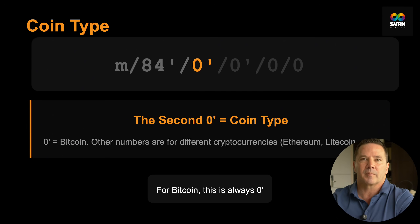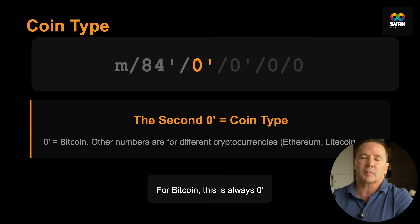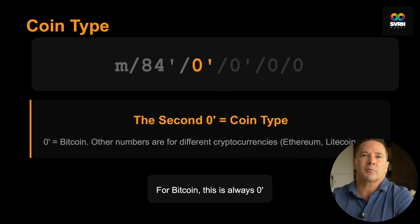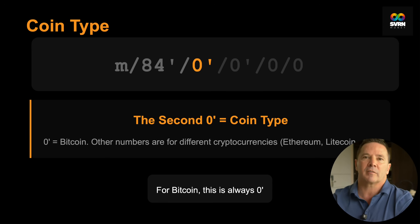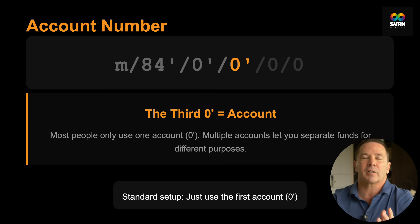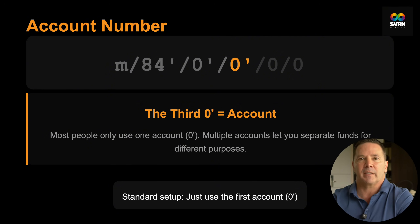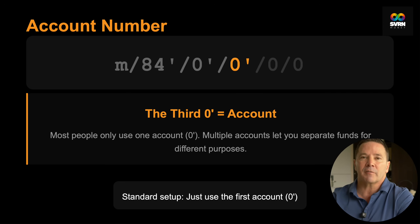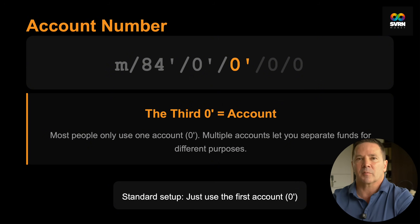The second number is the coin type. For Bitcoin, it's always zero. If you're using the same seed phrase for other cryptocurrencies like Ethereum or Litecoin, they would use a different number here. The third number in the sequence is your account number. Almost everyone just leaves this at zero, which is the first account in that wallet. You can have multiple accounts from the same seed phrase to separate funds for different purposes, but most people don't get into that complexity.